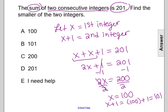So our two consecutive integers with a sum of 201 is 100 and 101. And we can check: 100 plus 101 is equal to 201. It checks out. So now this question wants the smaller of the two integers.